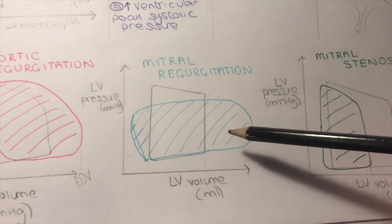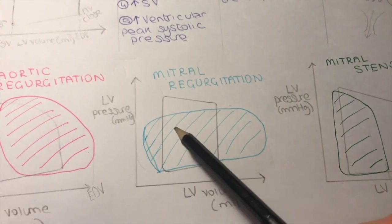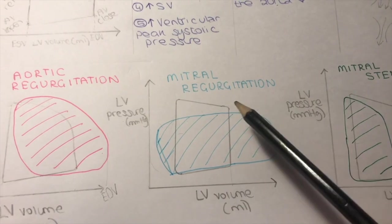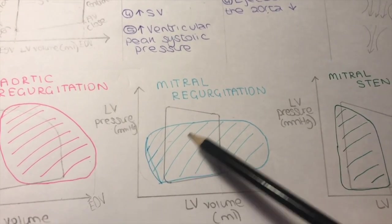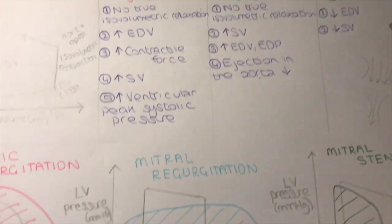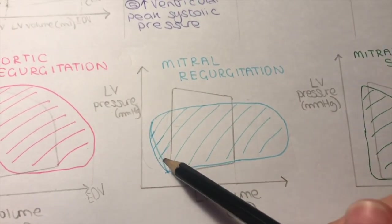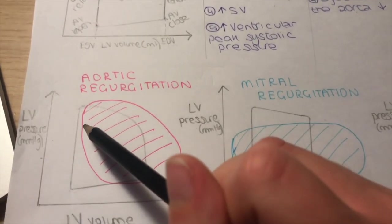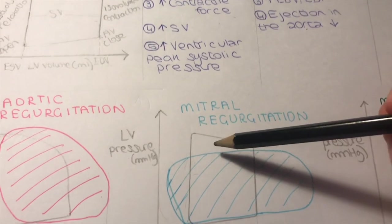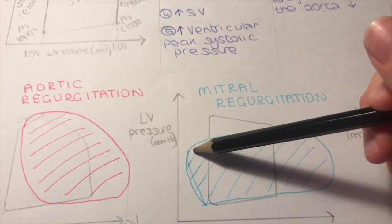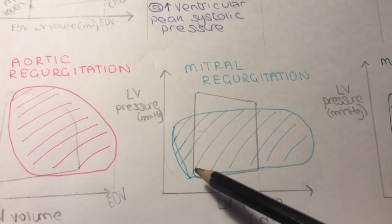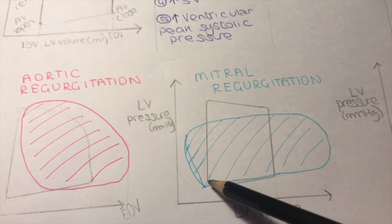Moving on to mitral regurgitation — this is the pressure-volume loop in mitral regurgitation compared to normal. Mitral regurgitation is when the mitral valve is not able to close completely, causing leakage of blood from the ventricle to the atrium. The first point is that there is no true isovolumetric relaxation, just like in aortic regurgitation. Here, the left ventricular volume decreases — as opposed to staying the same or increasing as in aortic regurgitation — because blood is still flowing from the ventricle to the atrium when the aortic valve is closed.